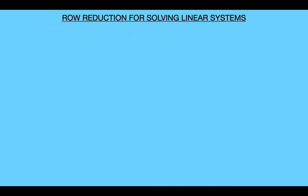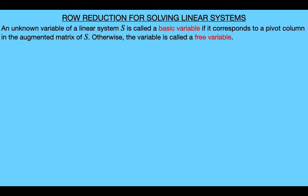First let me introduce some new terminology. We say that an unknown variable of a linear system S is called a basic variable if it corresponds to a pivot column in the augmented matrix of the system S. And otherwise, we say that the variable is called a free variable.